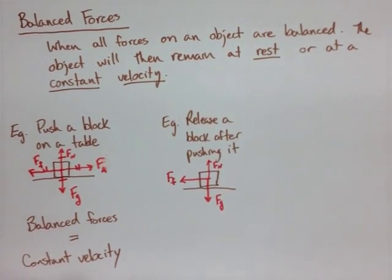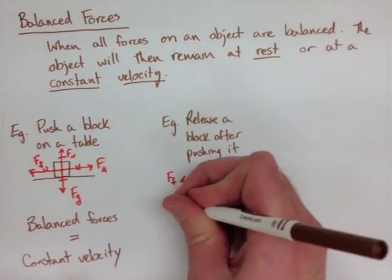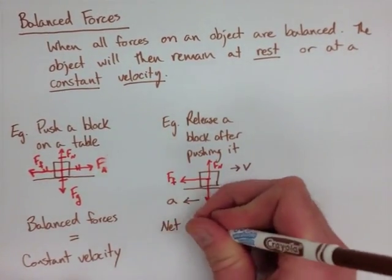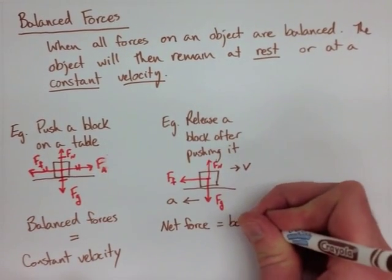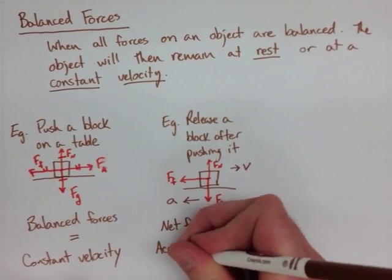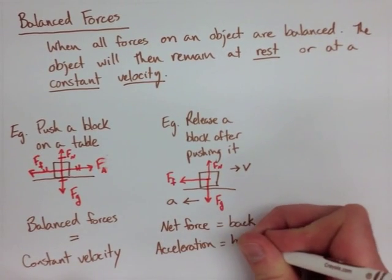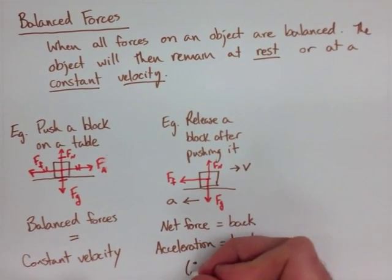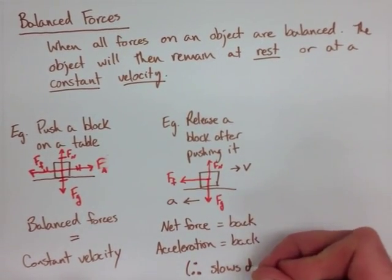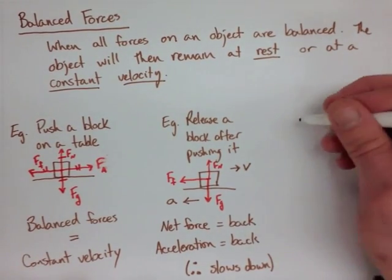Because we're no longer pushing this block, we have velocity in one direction, but our acceleration is going backwards, because that's where our net force is. We only have friction acting in the x direction. Our acceleration's back, so the object's slowing down, which makes sense.